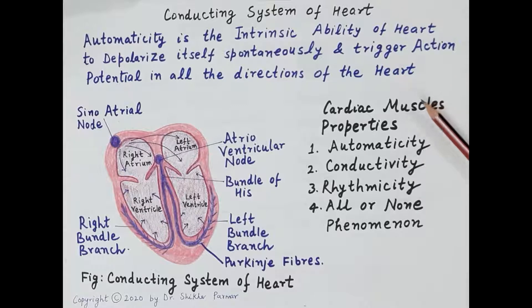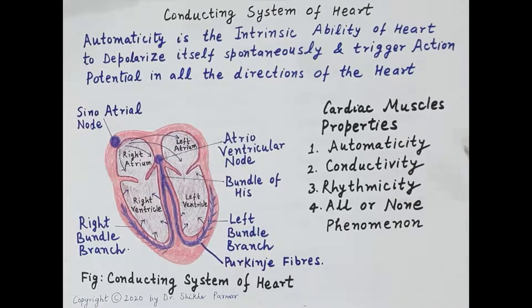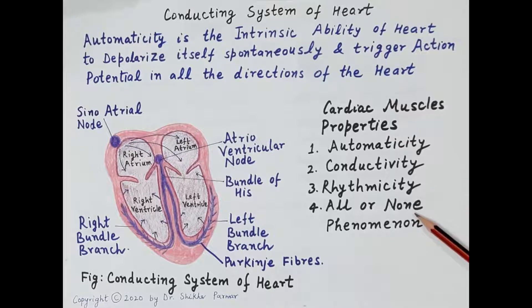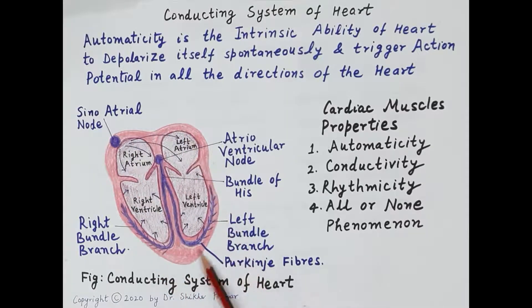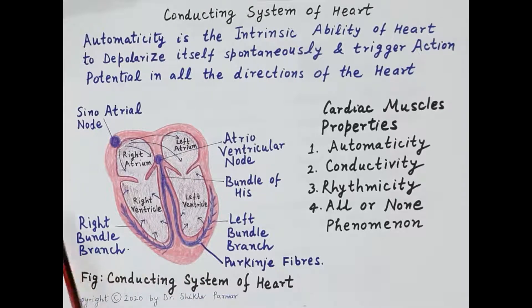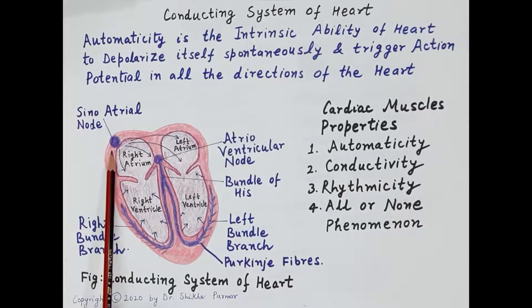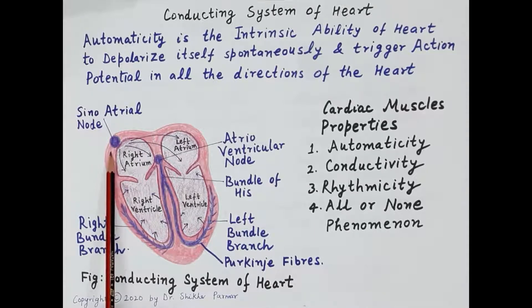Now let us discuss the properties of cardiac muscles and the conducting system of heart. There are four cardinal features of cardiac muscle tissue: automaticity, conductivity, rhythmicity, and all-or-none phenomenon. The wall of the heart, the myocardium, is made up of two types of cells: normal cardiac cells and specialized cells called pacemaker cells, such as the cells of the sinoatrial node, which possess the property of automaticity.